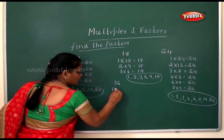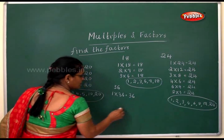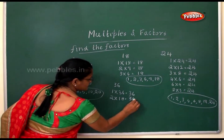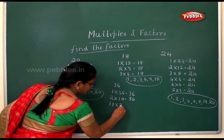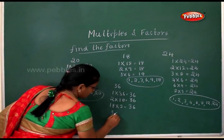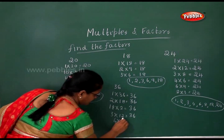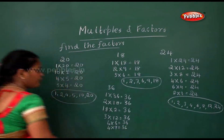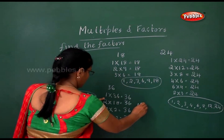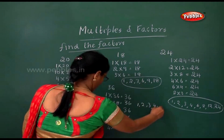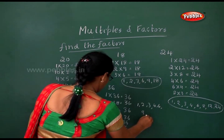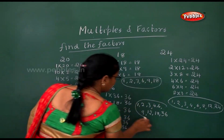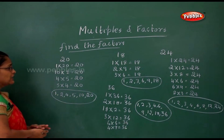For thirty-six: one thirty-six is thirty-six, two eighteens are thirty-six, three twelves are thirty-six, six sixes are thirty-six, four nines are thirty-six. So the factors for thirty-six are one, two, three, four, six, nine, twelve, eighteen, and thirty-six.